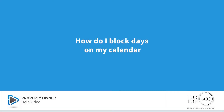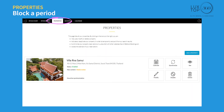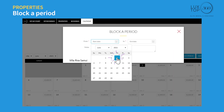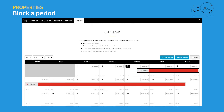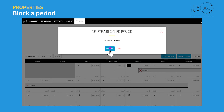How do I block dates on my calendar? Log in and click on 'Properties,' then click on 'Calendar.' Click 'Block a period,' select the beginning and end date, add notes if required, and click save. The selected dates will now show as unavailable for booking. You can modify or remove any blocked period using the edit icon to modify or the delete icon to delete.